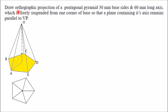In this video I will be explaining orthographic projection of a pentagonal pyramid. The side of the base is 30 mm and the axis height is 60 mm. It is freely suspended from one corner of the base so that a plane containing its axis remains parallel to VP. A pentagonal pyramid has one pentagonal base with side 30 mm and height 60 mm.